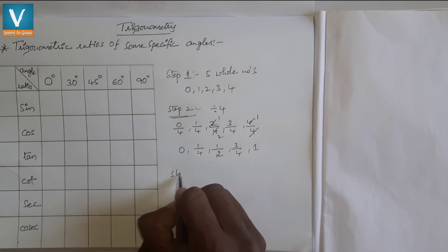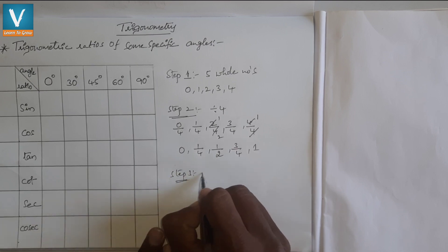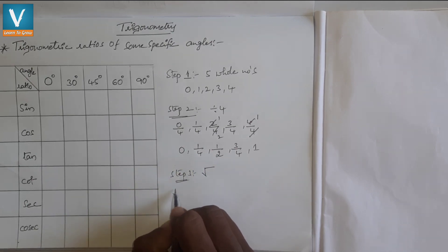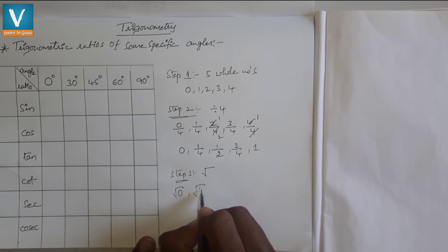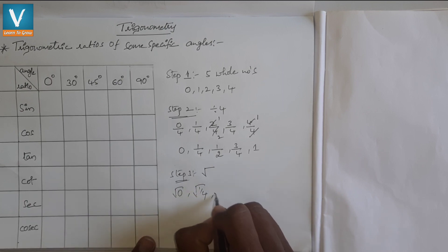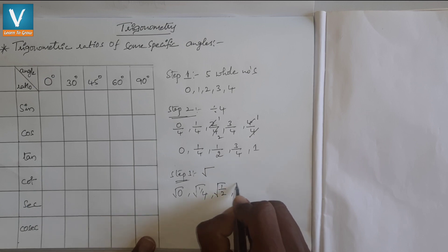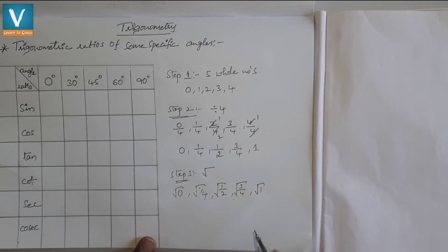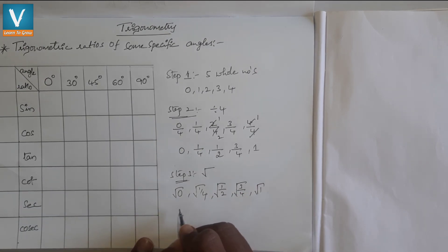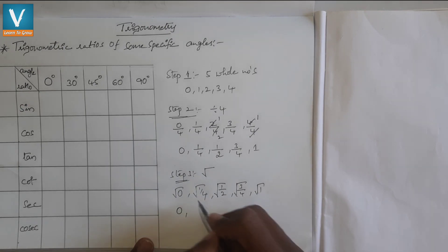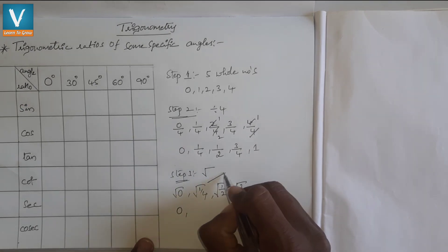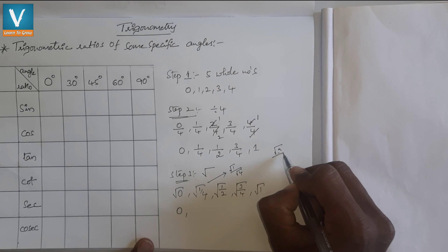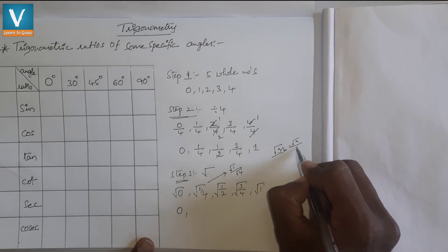In step 3, I am applying square root to these resulting numbers. We get √0, √(1/4), √(1/2), √(3/4), and √1. The value of √0 is 0. Now √(1/4) can be written as √1/√4, using the formula √(a/b) = √a/√b. Since √1 = 1 and √4 = 2, √(1/4) = 1/2.